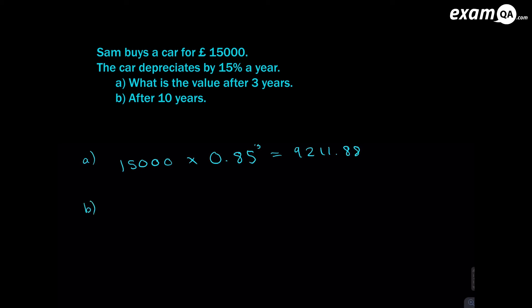Now part B asks us after 10 years. So again, the same thing. The value times the multiplier. And because of depreciation, it's 0.85. And it's the power of the number of years, which is 10.